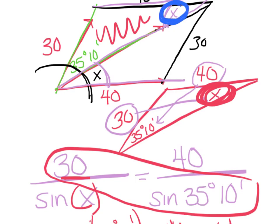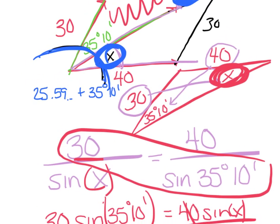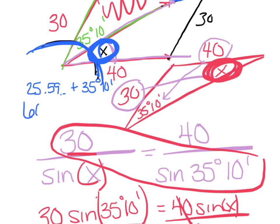And that question wanted the whole angle. So I'm just going to take what I have and add on to it. So again, I'm taking that 25.592 number that I had, that I stored, and I'm going to add on to that my 35 degrees in 10 minutes. And I get 60.759. And they want that to the nearest 10 minutes.